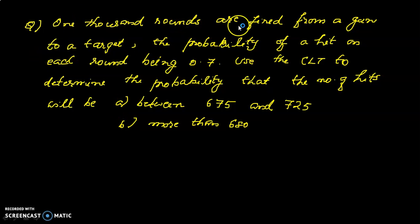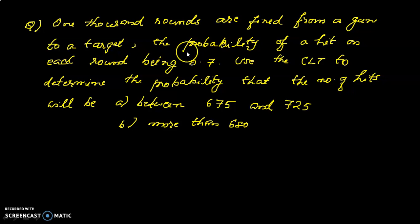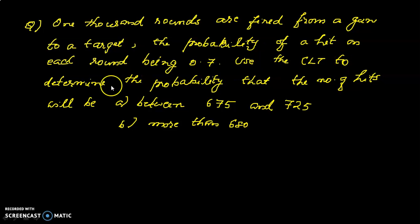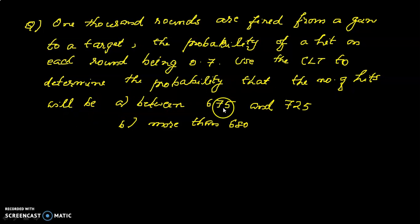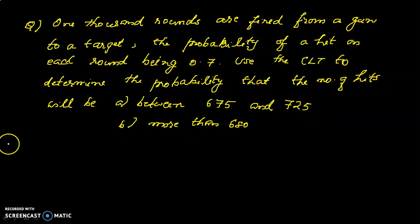1,000 rounds are fired from a gun at a target. The probability of a hit on each round is 0.7. Use the central limit theorem to determine the probability that the number of hits will be between 675 and 725. Second question: more than 680.